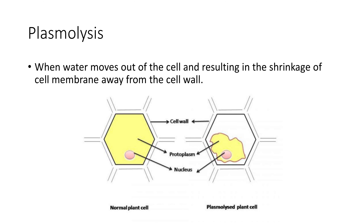Plasmolysis. When water moves out of the cell, it results in the shrinkage of the cell membrane away from the cell wall. See this picture — here you can see the contraction of the protoplast of a plant cell as a result of loss of water from the cell, that is, shrinkage of protoplasm.